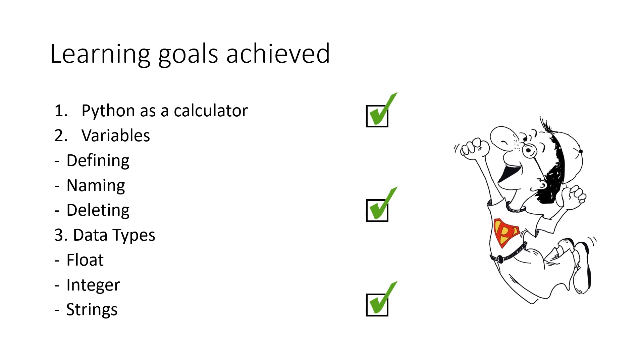The learning goals achieved for this week: first of all we learned how you can use Python as a calculator. Afterwards, we learned how we can define, name, and delete variables. And in the end, in this lesson you got to know what floats are, what integers are, and what strings are.